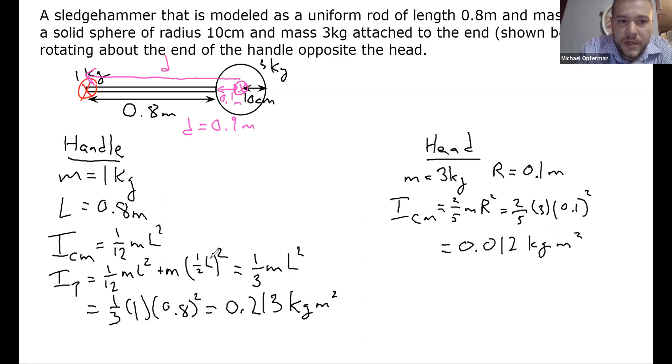So it's going to be 0.8 plus 0.1, because we have to go all the way from the center of the sphere to the end of the rod. So we're going to have MD squared that we need to worry about. M is 3. D is 0.9. That gets squared. So 3 times 0.9 squared is 2.43.